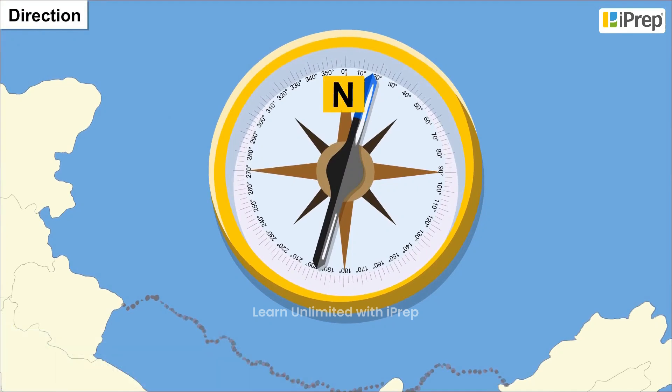Direction. You can find an arrow marked sign with the letter N at the upper right hand corner in the map. It shows the north direction and is known as the north line. Using the direction of the north line, people can easily find out other directions like east, west and south.